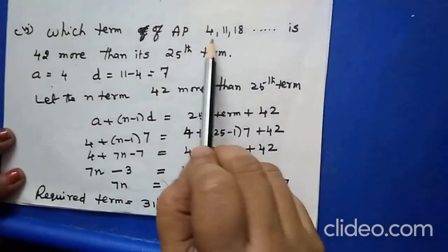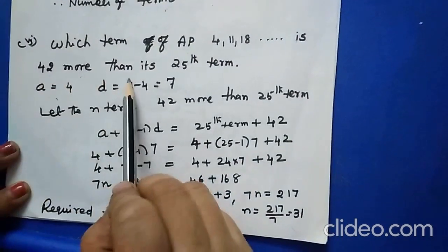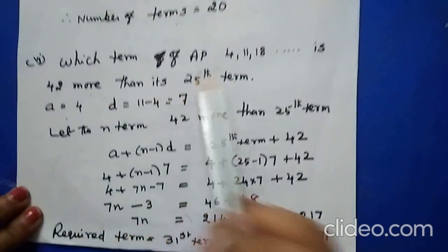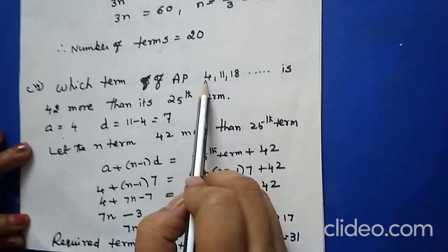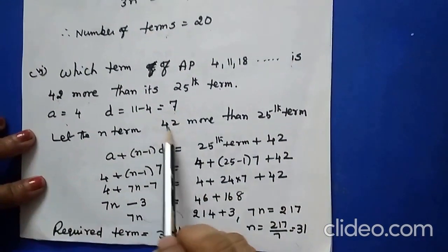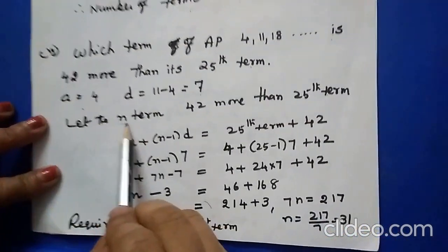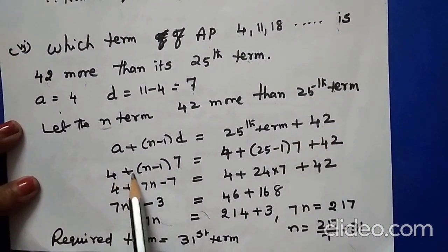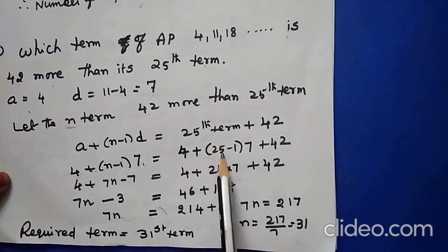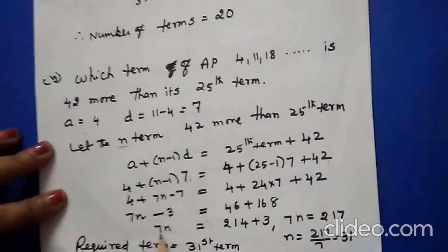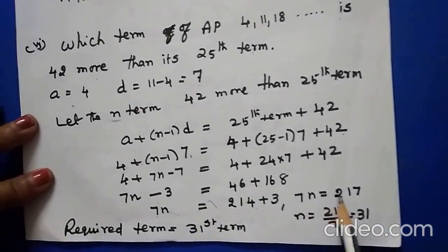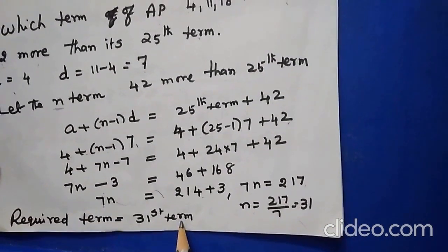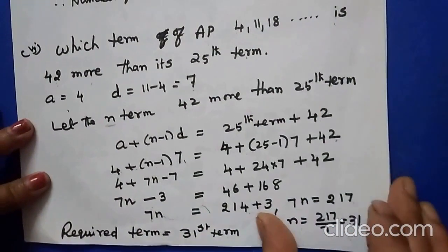Which term of the AP 4, 11, 18, etc. is 42 more than its 25th term? A=4, D=11-4=7. Let the Nth term be 42 more than the 25th term. Apply: A + (N-1) × D = [A + (25-1) × D] + 42. So 4 + (N-1)×7 = 4 + 24×7 + 42. Simplifying and bringing N to the left: 7N = 217, giving N = 31. Therefore the 31st term is 42 more than the 25th term.